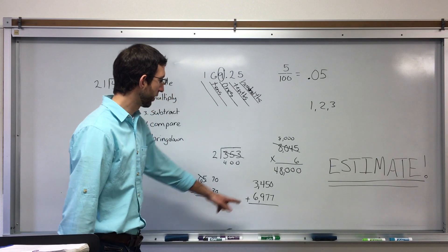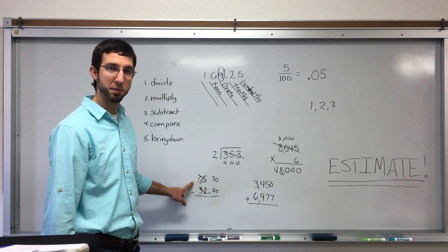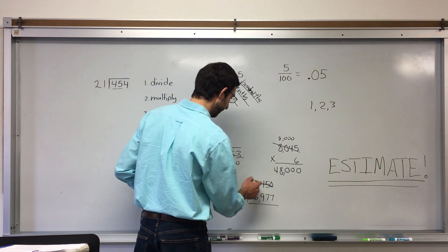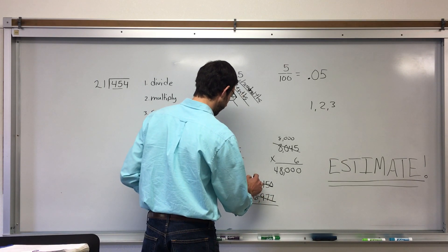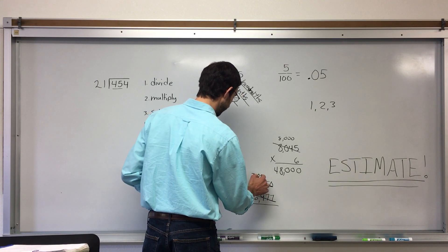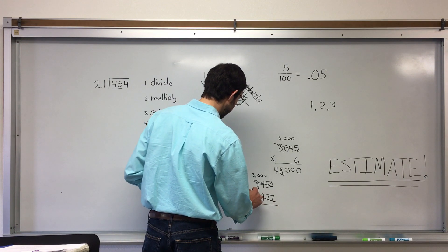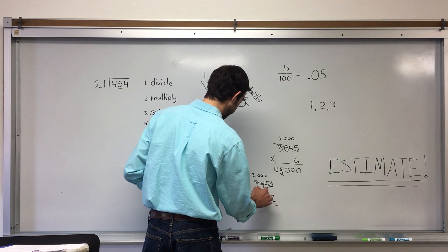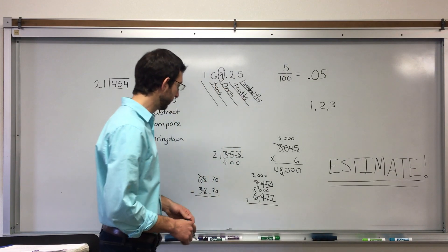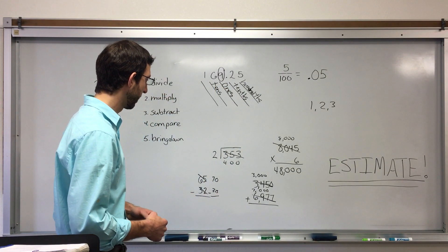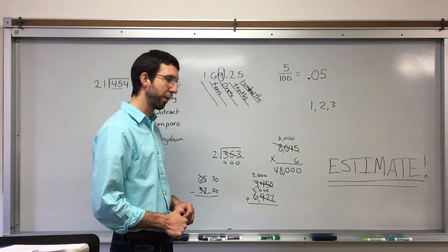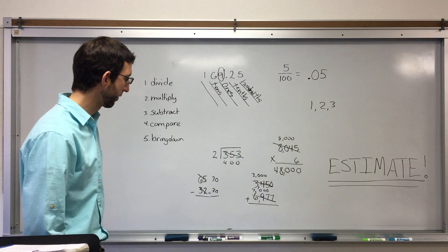Addition. You do the same thing as you would do in subtraction. You round both to the largest place value. And this one would be 7,000, right? And then you can add that really easily. Very easily.